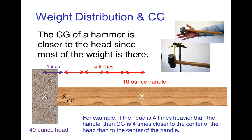So if it was simple like this, it's something that could be calculated. Say the head is four times heavier than the handle, then the center of gravity is located four times closer to the head of the hammer than to the center of the handle.